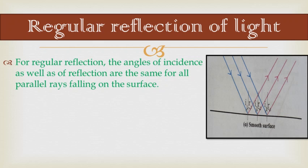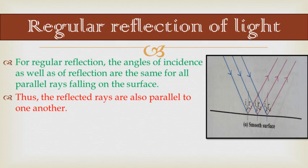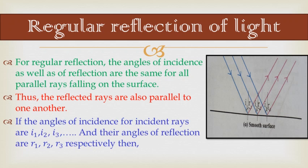For regular reflection, the angle of incidence and angle of reflection are the same for all parallel rays falling on the surface, and thus the reflected rays are also parallel to one another. If the angles of incidence are i1, i2, and i3 and their angles of reflection are r1, r2, and r3 respectively, then i1 = i2 = i3, meaning they are all equal since the rays are parallel.